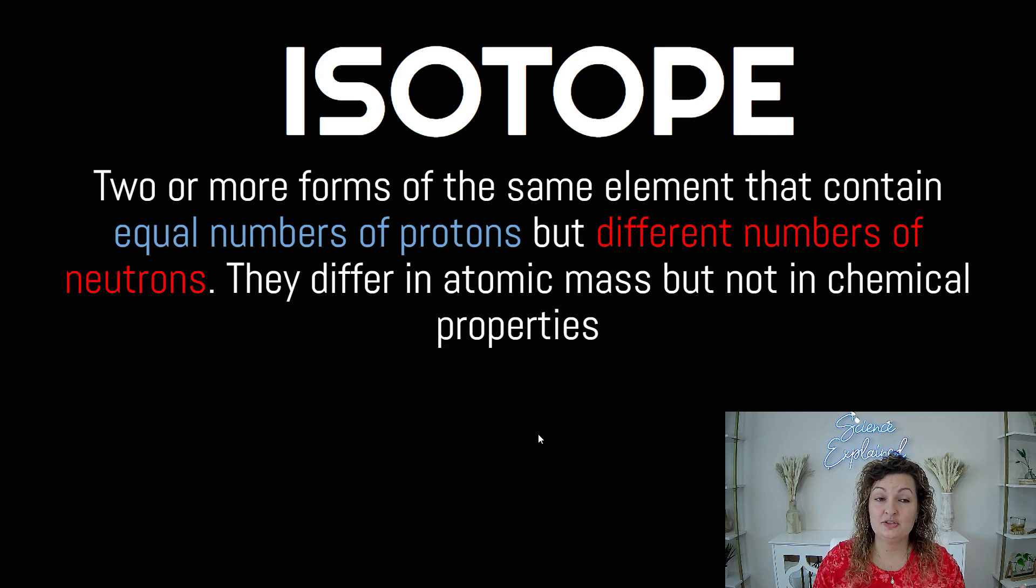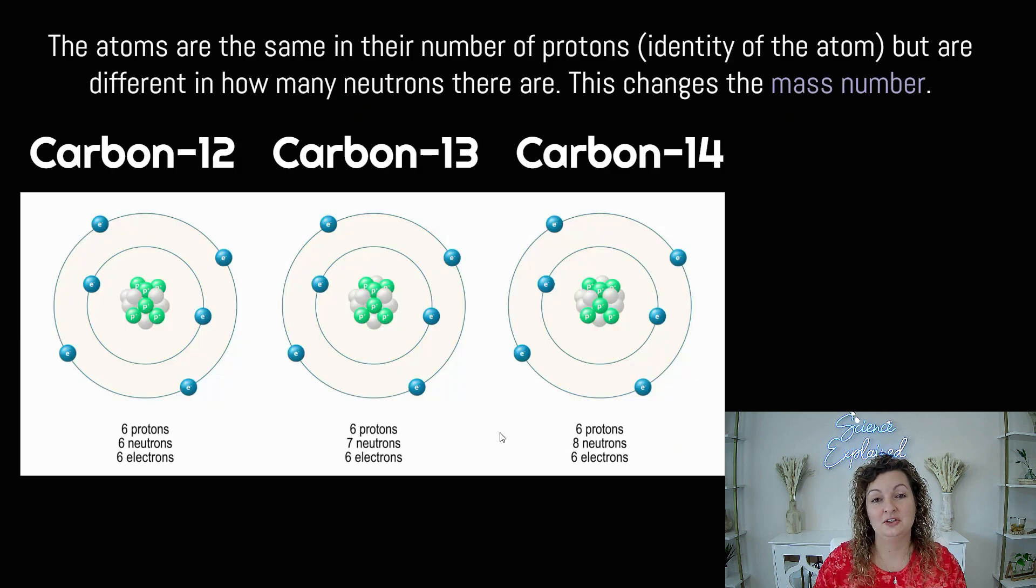So what in the world is an isotope? Just for a little bit of review, it's going to be atoms that have the same number of protons, so they're the same element name, but they have different number of neutrons, and the neutrons are what are changing. Therefore, their atomic mass is changing as well.